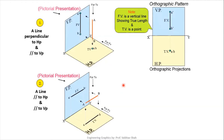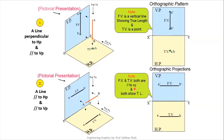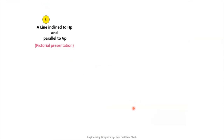For Case 2, after rotating HP 90 degrees clockwise, both front view and top view are parallel to the XY line, and both show the true length — because the line is parallel to both HP and VP. Whenever a line is parallel to both planes, both views on their respective planes show true length.